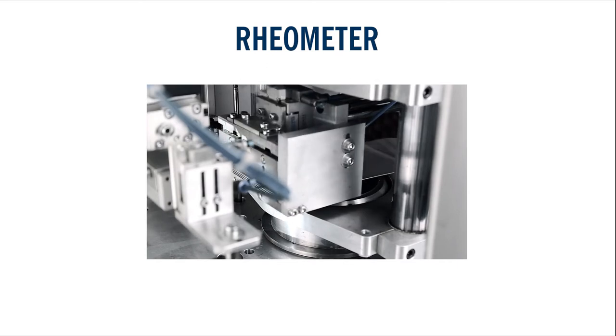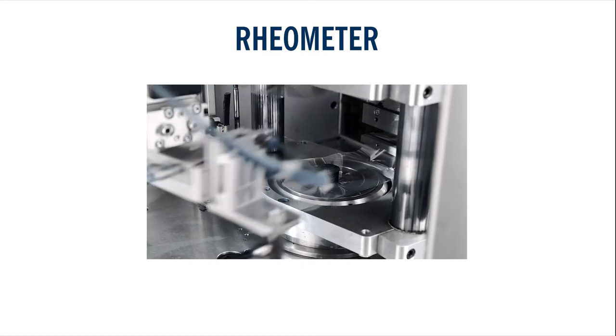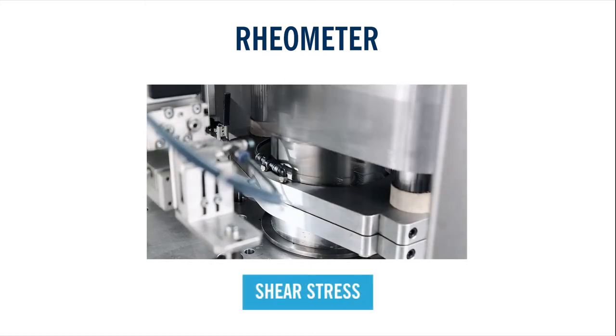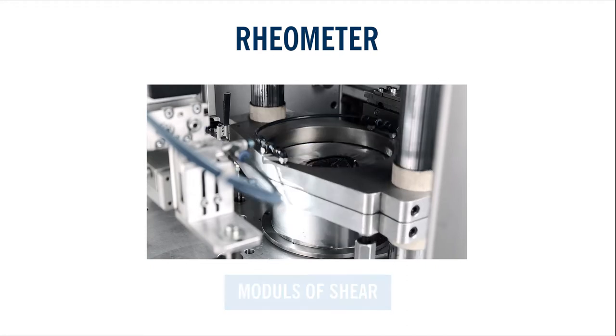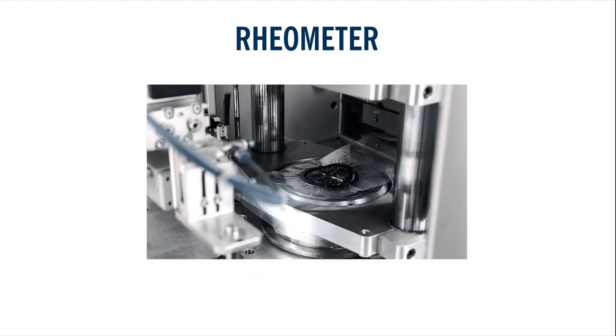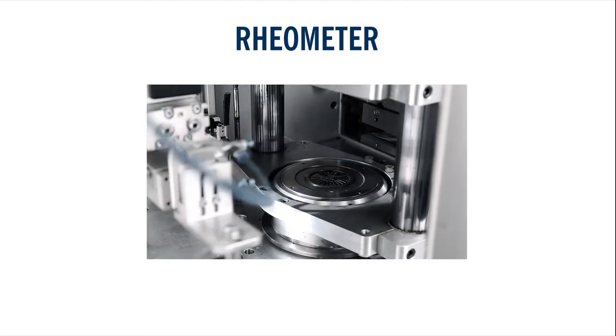The mixture is vulcanized under pressure and temperature between two oscillating plates. From the measured torque, shear stress, elongation and shear modulus are determined. These values are characteristic for the respective mixture and determine the product properties of the lot.